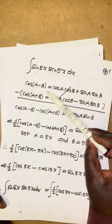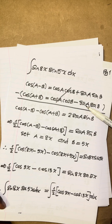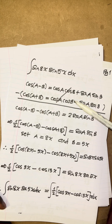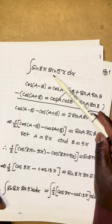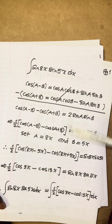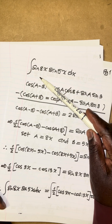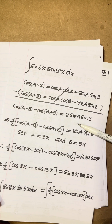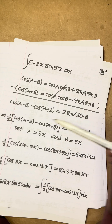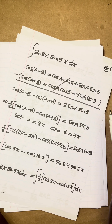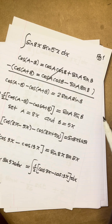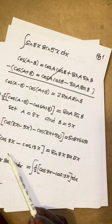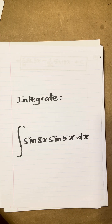We had to subtract the two cosine compound angle equations because the term we needed was sine sine, and the signs were different, making the two into one term. This allowed us to rewrite the integrand as a difference of two cosine expressions, which are straightforward to integrate. I hope you appreciated that — I'll see you in the next one.